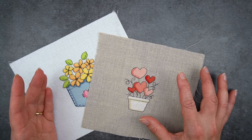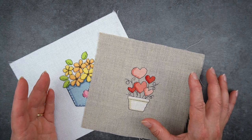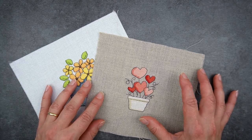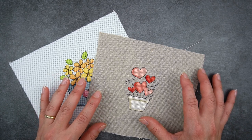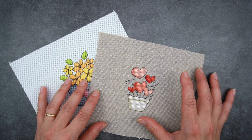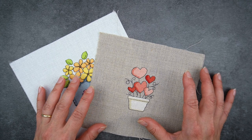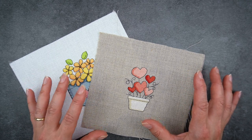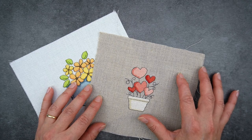Finally linen or even weave can be more expensive. So as I record this video 32 count linen is about 40% more expensive in one of my favourite online stores than the equivalent size piece of 16 count Aida. Of course this might change over time so it's just something to check if you're trying to be a bit more frugal with your stash spending.